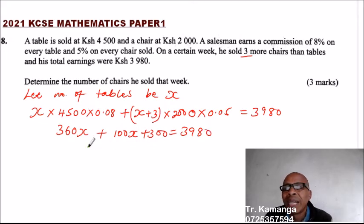100 multiplied by X, that will give you 100X plus 300 equals 3980. So you will put the like terms together. You have 460X, that is 100X plus 360X. You take 300 to the other side, it becomes minus. So you say this is 3980 minus 300, that should give you 3680.